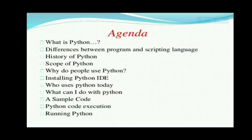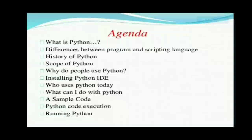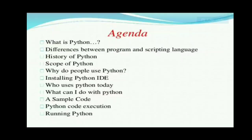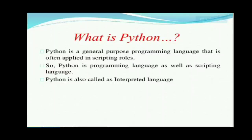So what is Python and how is it used? In simple terms, you can use Python as a fancy calculator — once you write a simple program for accepting records from the user, you can perform calculations based on it. It can also hide the complexity of equations or programming. Python is a general purpose programming language that is often applied in scripting roles as well. So Python is both a programming language and a scripting language.